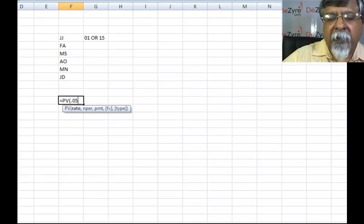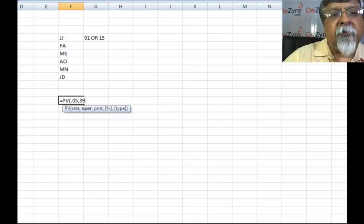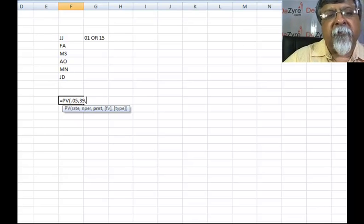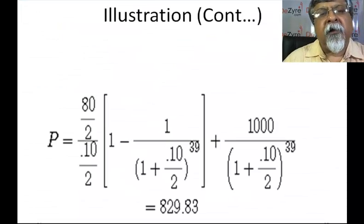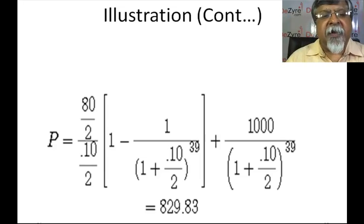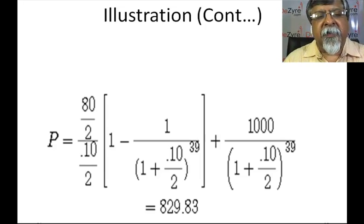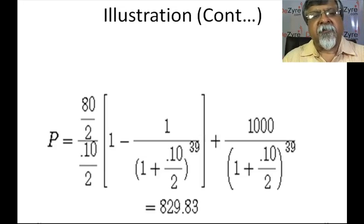How many periods? There are 39 coupons left. How much is the payment? You are going to receive a coupon of 8%, which means $80 every year, which means $40 every 6 months.